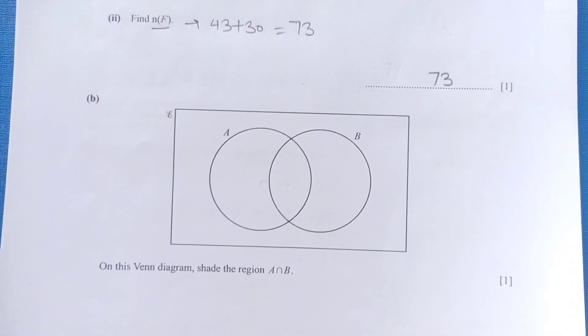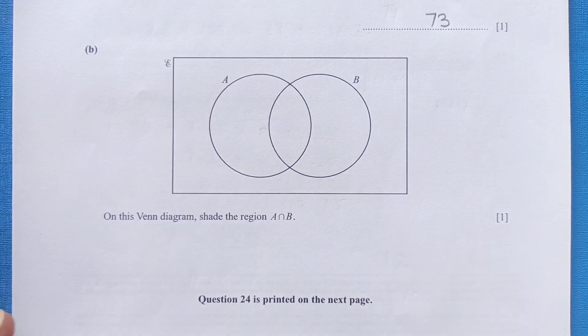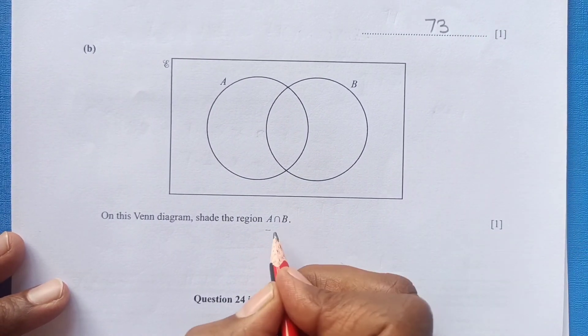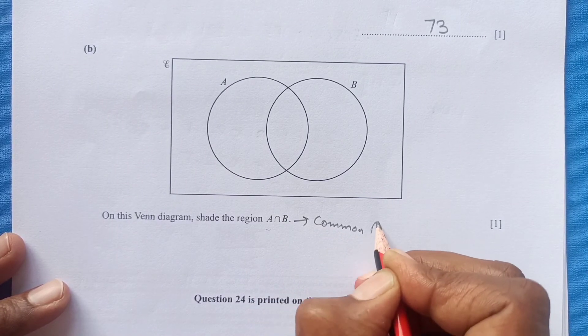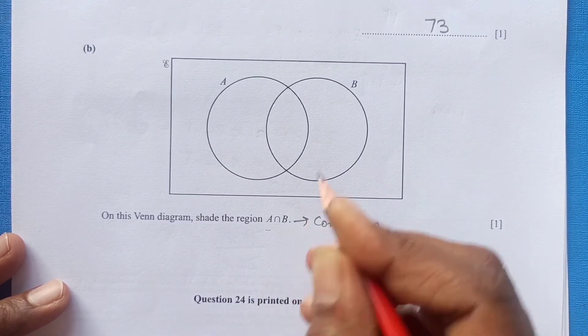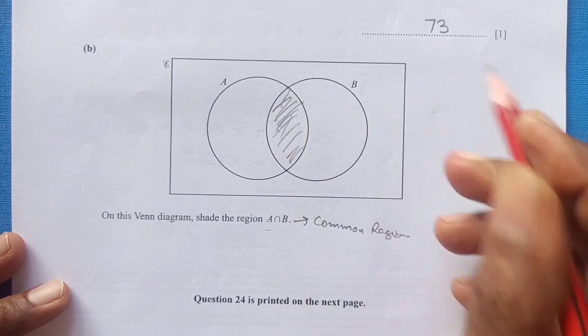Now the last part, you can see Venn diagram. On this Venn diagram, shade A intersection B. A intersection B is the common region of A and B. So this is the common region.